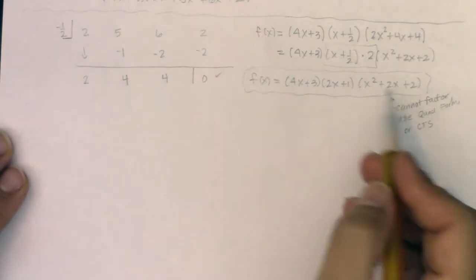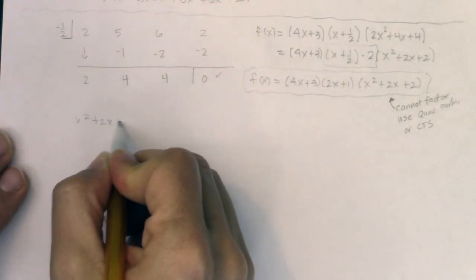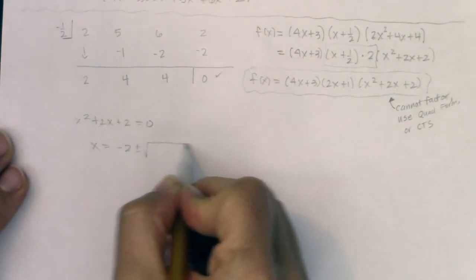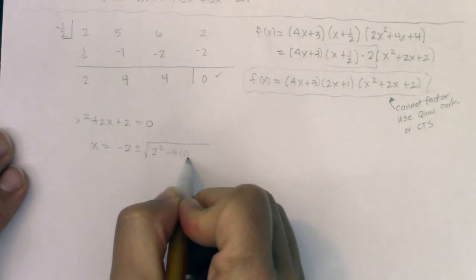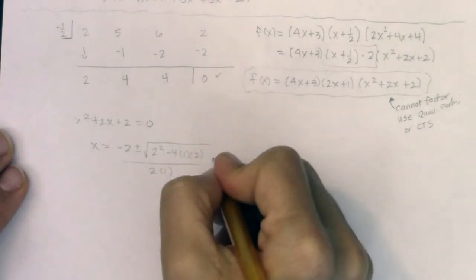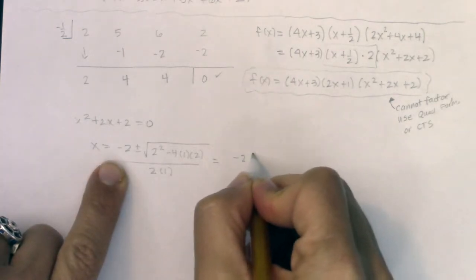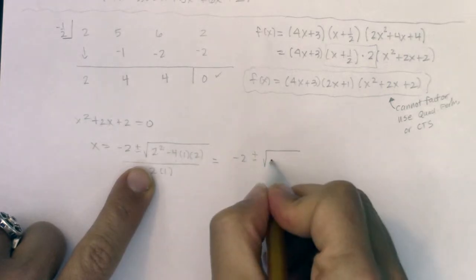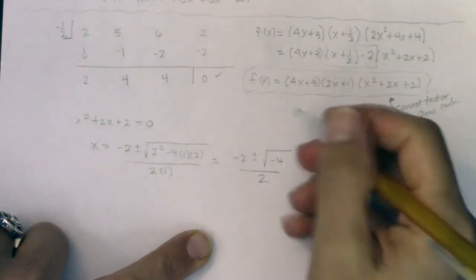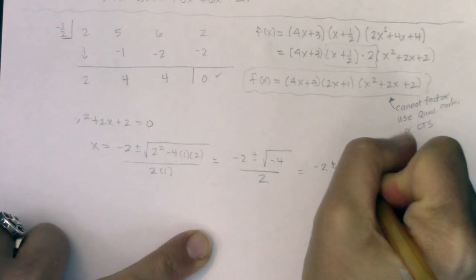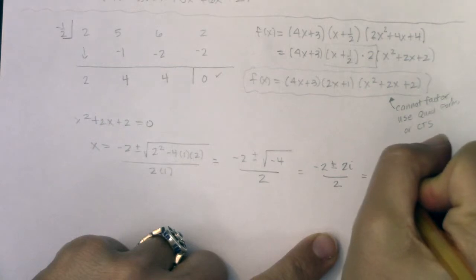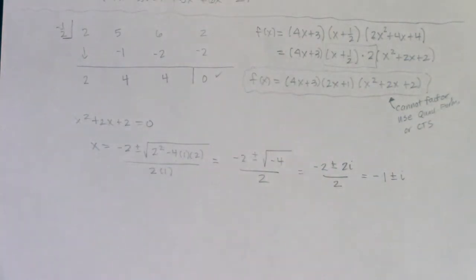So I've got x² + 2x + 2 equal to zero. Let's use the quadratic formula: negative two plus or minus the square root of b² minus 4ac, all over 2a. So I've got negative two plus or minus the square root of — two squared is four, four minus eight is negative four — all over two. So I am looking at negative two plus or minus 2i over two, which simplifies to negative one plus or minus i. So there are my other two zeros.